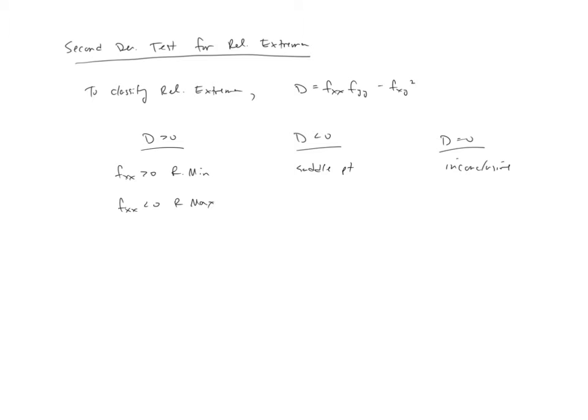we're going to use the second derivative test for relative extrema. And so it reads like this: D equals f sub xx, f sub yy, this is multiplied, minus f sub xy squared. If this D value is bigger than 0, less than 0, or equals 0, we have some different answers.